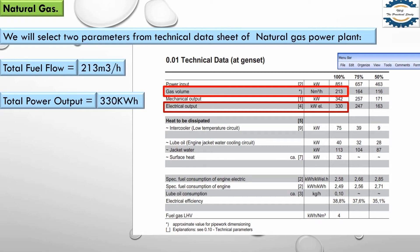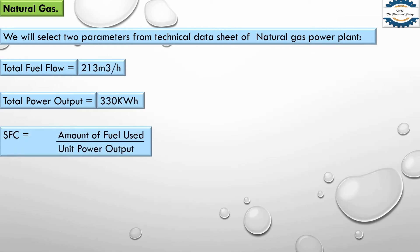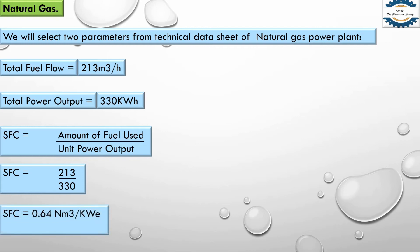Putting these two parameters into the formula, specific fuel consumption equals amount of fuel used divided by power output. Fuel use is 213 cubic meters per hour and power output is 330 kilowatt, giving us 0.64 cubic meters per kilowatt. So to produce one kilowatt of electricity from a natural gas power plant, 0.64 cubic meters of natural gas is required.